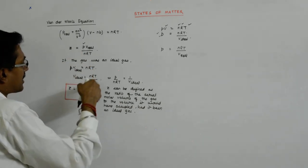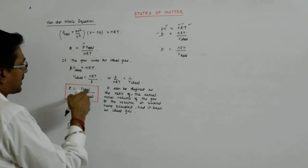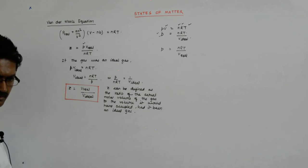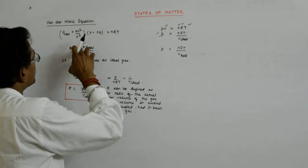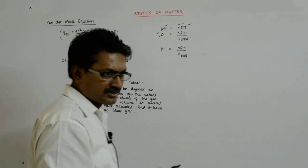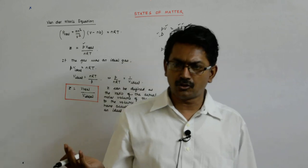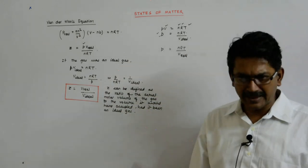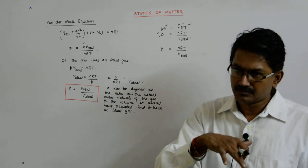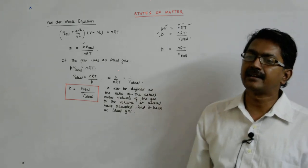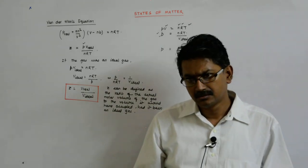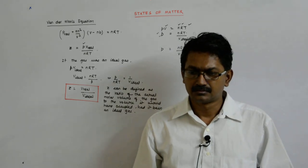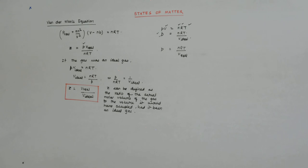So that becomes equal to 1/V_ideal. P/nRT. So what happens? If I put that value here, it becomes this. What does it say? It actually becomes the ratio of what you will be getting upon what you would have got - what you are getting in the real case to what you would have got had it been ideal. That is what Z is.